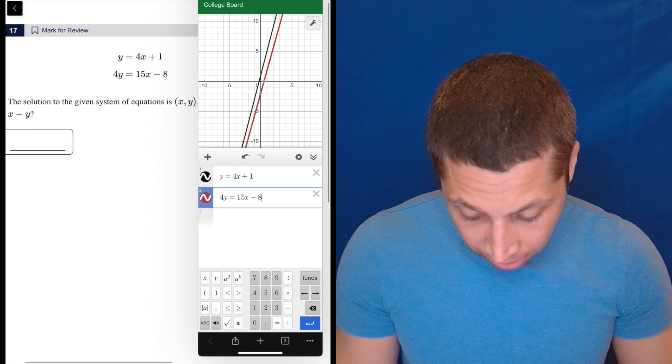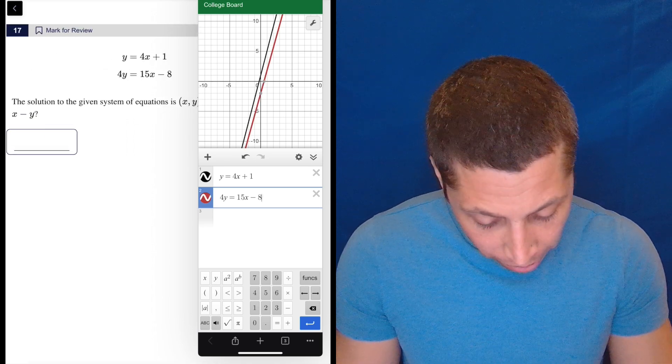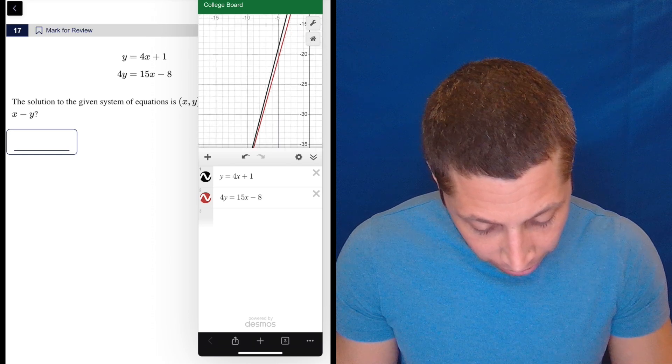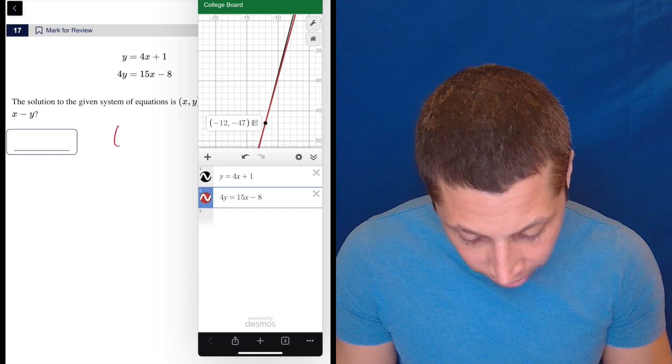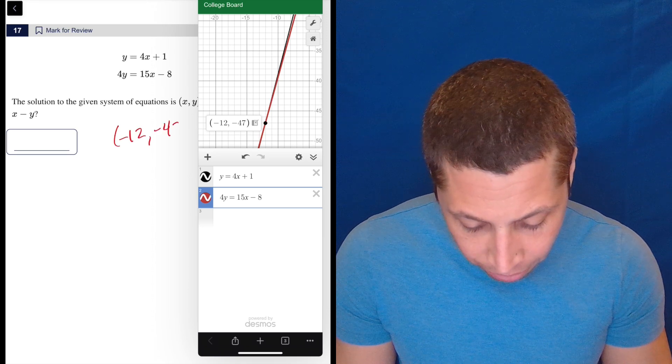And yeah, what is the value of X minus Y? Well, these look like they're almost parallel, but you can kind of see they're coming together. And then somewhere down here, they're going to hit, just kind of tap around and you'll see it. So the point of intersection is negative 12, negative 47.